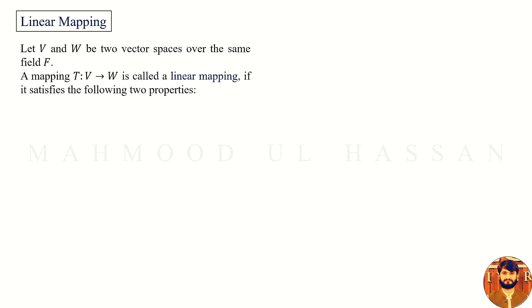Hello viewers, this is Mahmood. In this video we are going to learn linear mapping. Let V and W be two vector spaces over the same field F. Then a mapping T from vector space V to vector space W is called a linear mapping if it satisfies the following two properties. The first property is additivity.